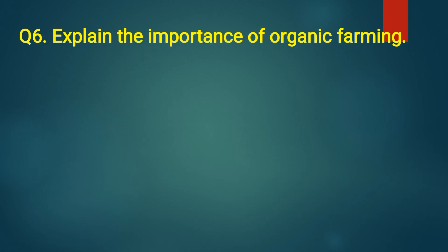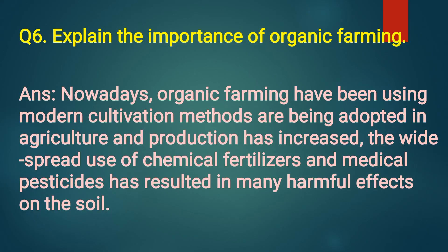Question number six: Explain the importance of organic farming. Answer: Nowadays, modern cultivation methods are being adopted in agriculture and production has increased. However, the widespread use of chemical fertilizers and pesticides has resulted in many harmful effects on the soil.